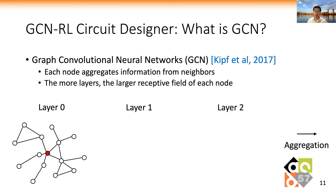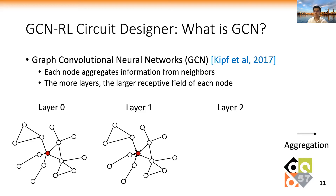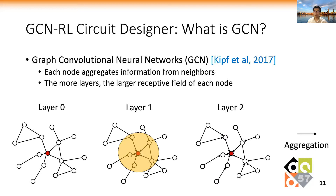GCN is short for graph convolutional neural networks. In one GCN layer, each node of the graph aggregates the features from neighboring nodes. The more GCN layers, the larger the receptive field. For example, in layer 0, the red node only has its own features. After GCN layer 1, it has information from its neighbors. After GCN layer 2, it has information from neighbors of neighbors.